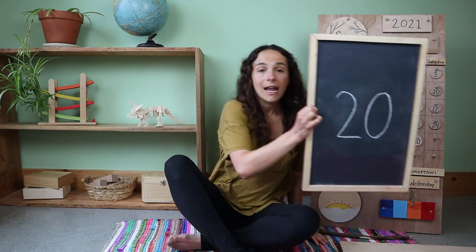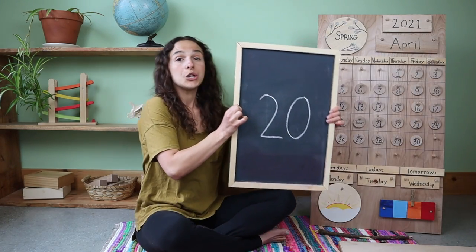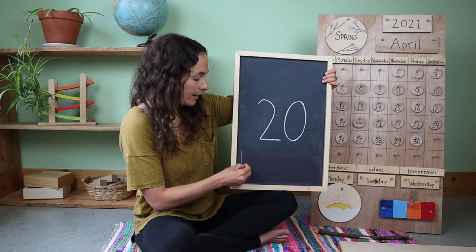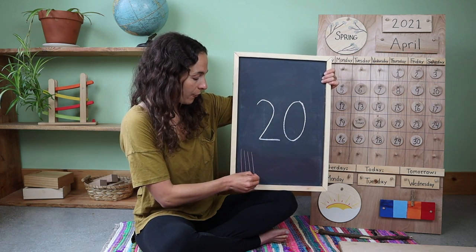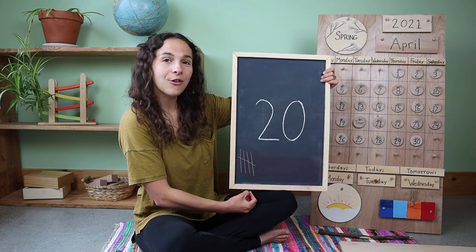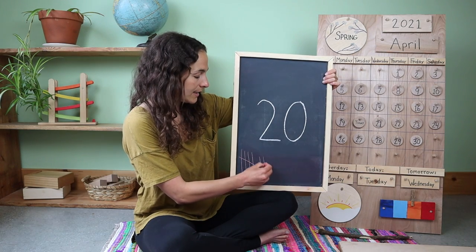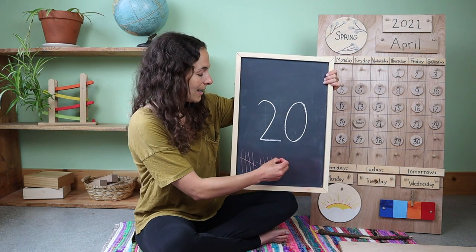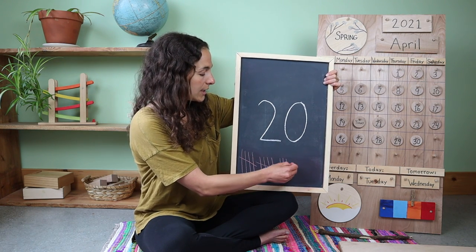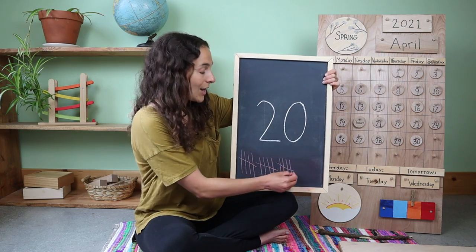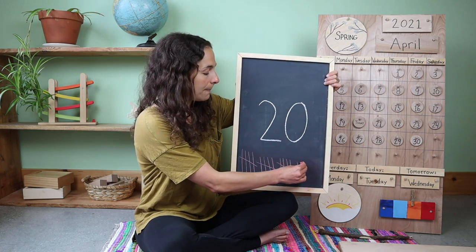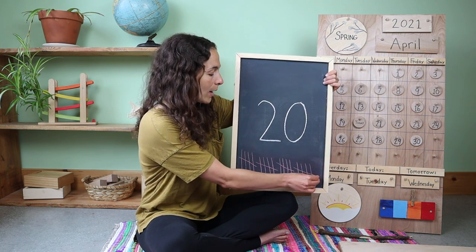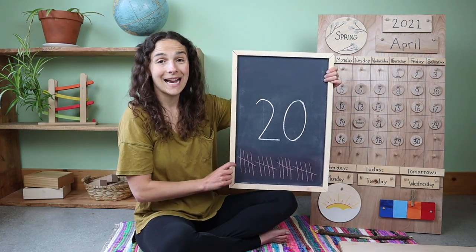And now let's count 20 tally marks together. Are you ready? One, two, three, four, five goes across, six, seven, eight, nine, ten goes across, eleven, twelve, thirteen, fourteen, fifteen goes across, sixteen, seventeen, eighteen, nineteen, and twenty. 20 tally marks.